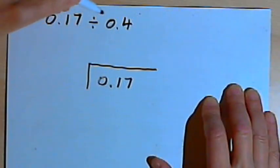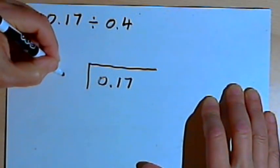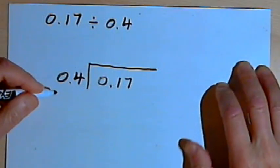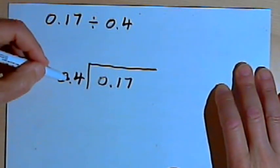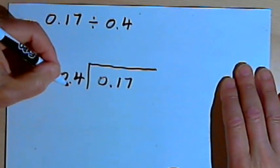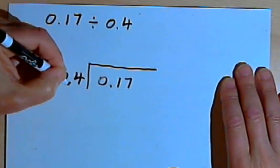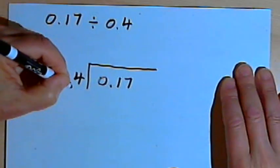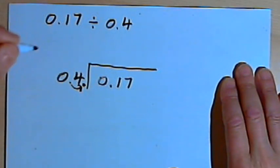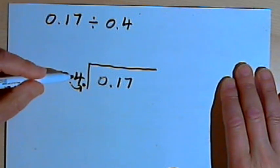And I'll take the divisor, 0.4, and put it to the left of the box. And now what we want to do before we start is turn the divisor into a whole number. I can turn a decimal into a whole number by moving its decimal point all the way to the right. So in this case I'm going to move the decimal point one place to the right, and now the divisor is just 4.